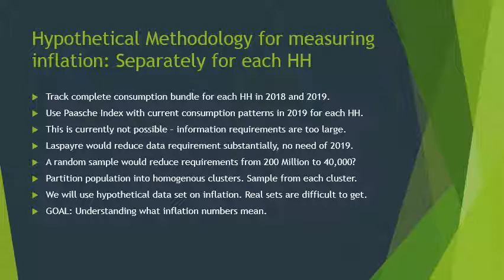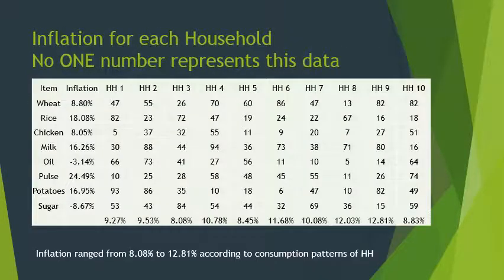We look at a data set for only 10 households to get an idea of what we are trying to do. Here random numbers have been generated. We have eight commodities — wheat, rice, chicken, milk, oil, pulses, potatoes, and sugar — and we have the inflation rate for each of these commodities.